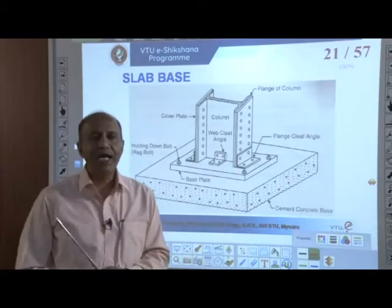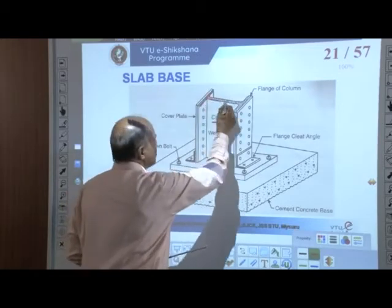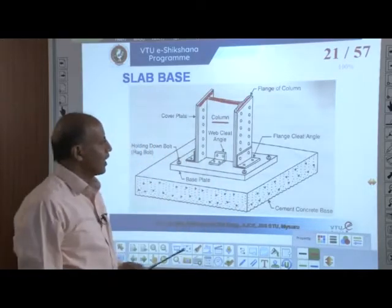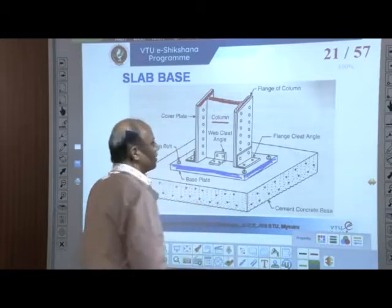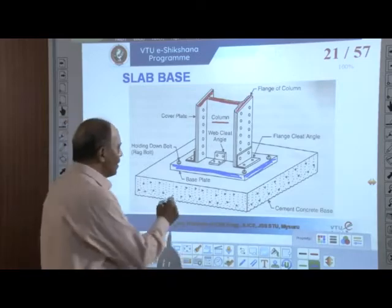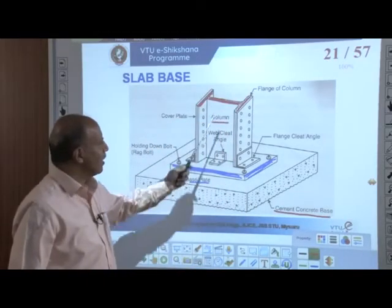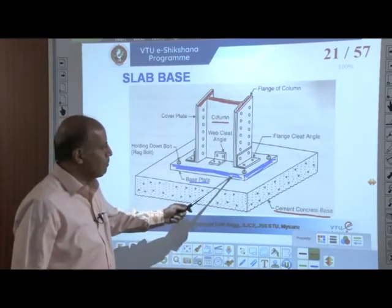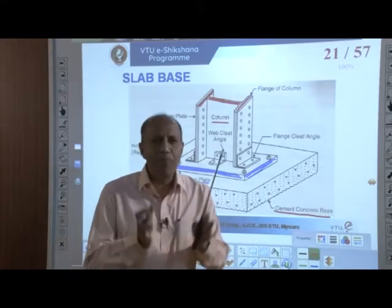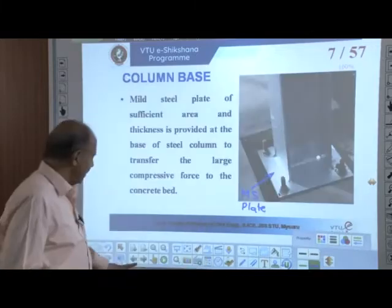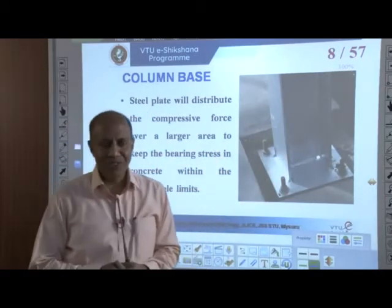This is the arrangement for the slab base: the I-section column rests on the MS steel plate (base plate), which in turn rests on the cement concrete bed. Cleat angles are provided — web cleat angles connect the web of the I-section to the MS plate, and flange cleat angles connect the flange to the MS plate. This keeps the I-section in position with nominal bolts.